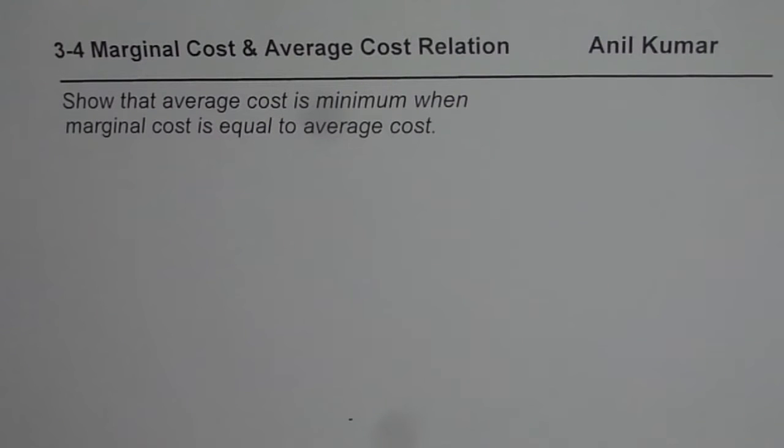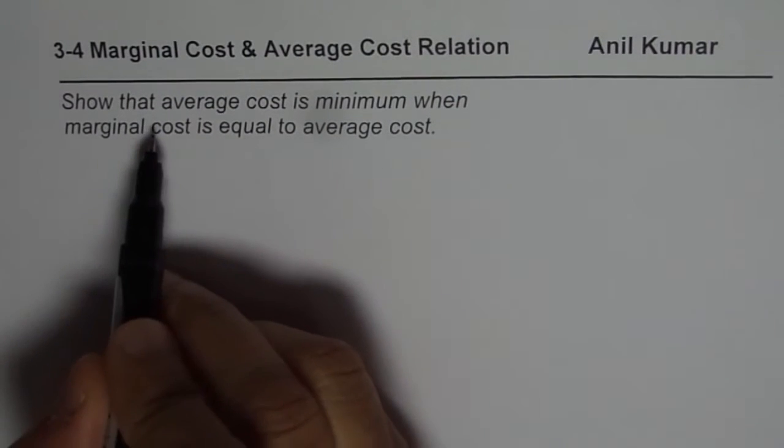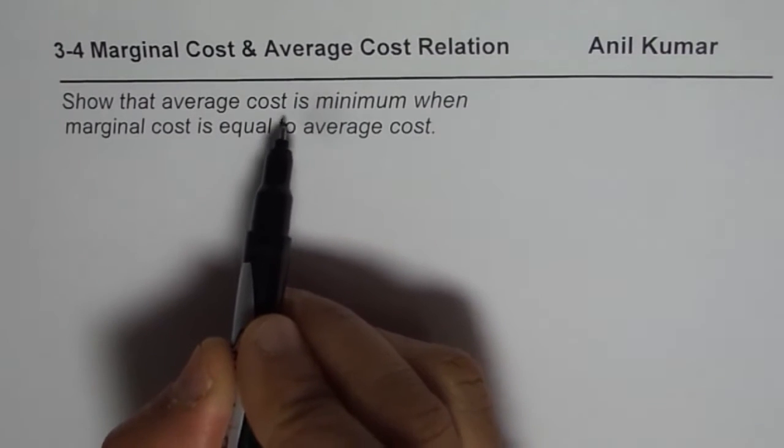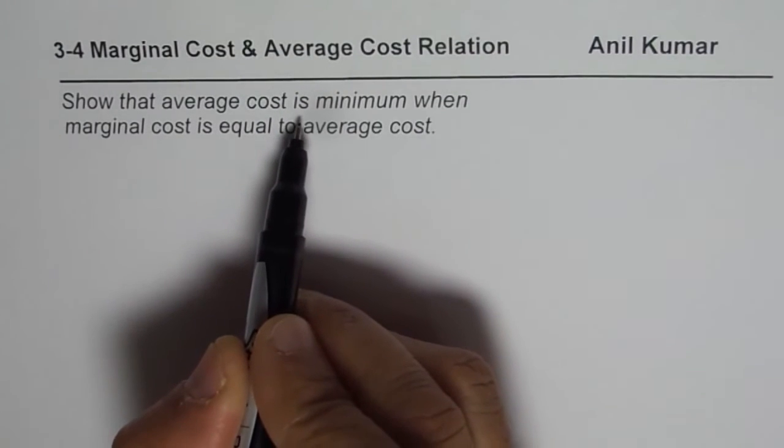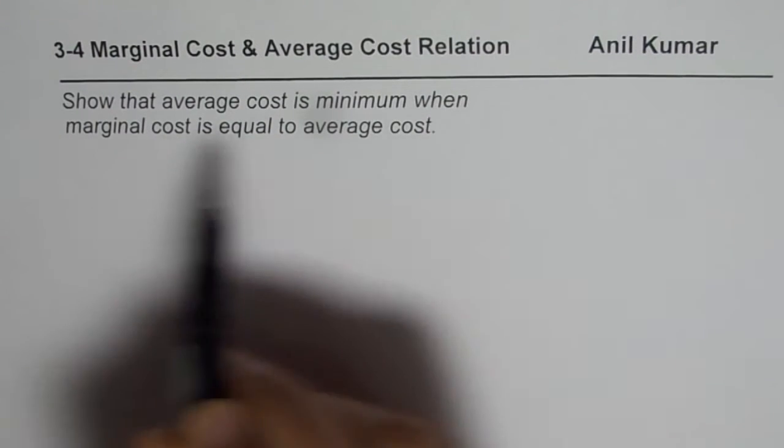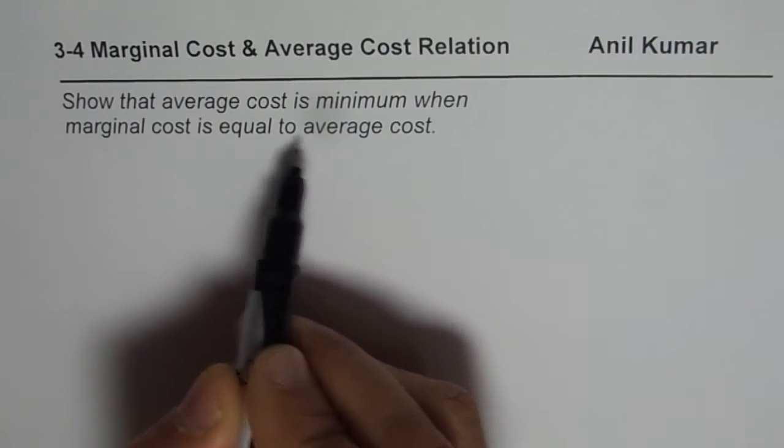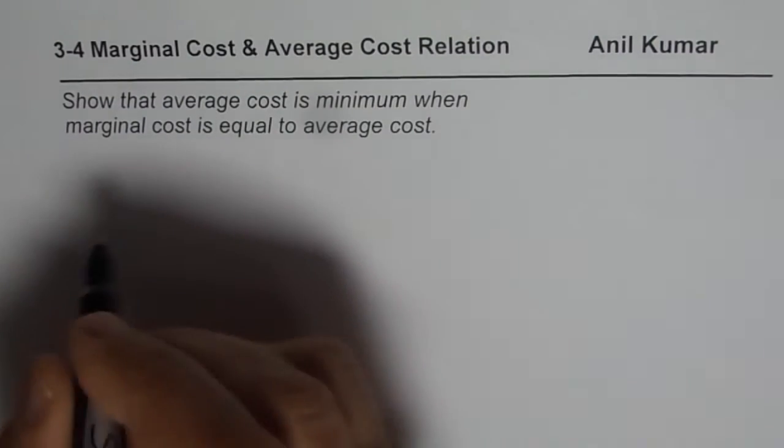And this is a very important concept. So we need to show that average cost in producing any item is minimum when marginal cost is equal to average cost. So let us understand both the terms.